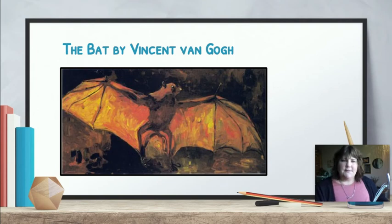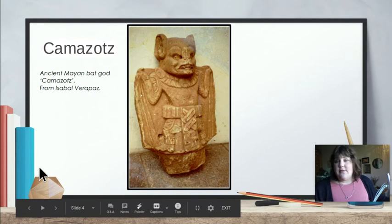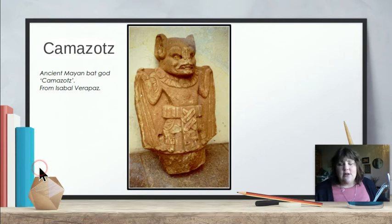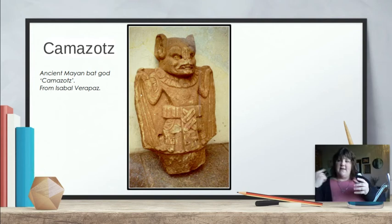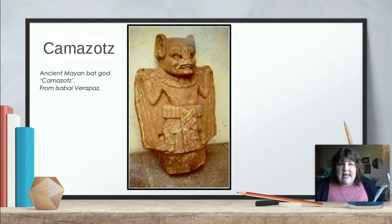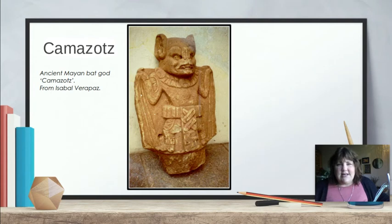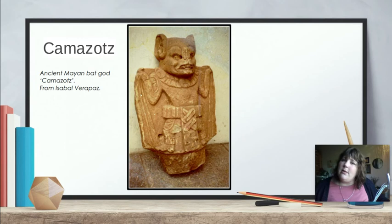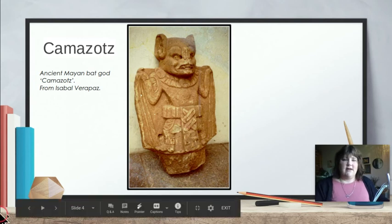As I was looking around for more bat art, I saw this sculpture. Remember we talked about this last week with the spiders — a sculpture is a work of art that you can go all the way around. This little bat sculpture is from Mexico, from the Mayan Indians, and they have a bat god called Camazotz. Isn't it interesting? It looks like a warrior — it's wearing a warrior necklace and warrior belt. It's kind of like part human, part bat.